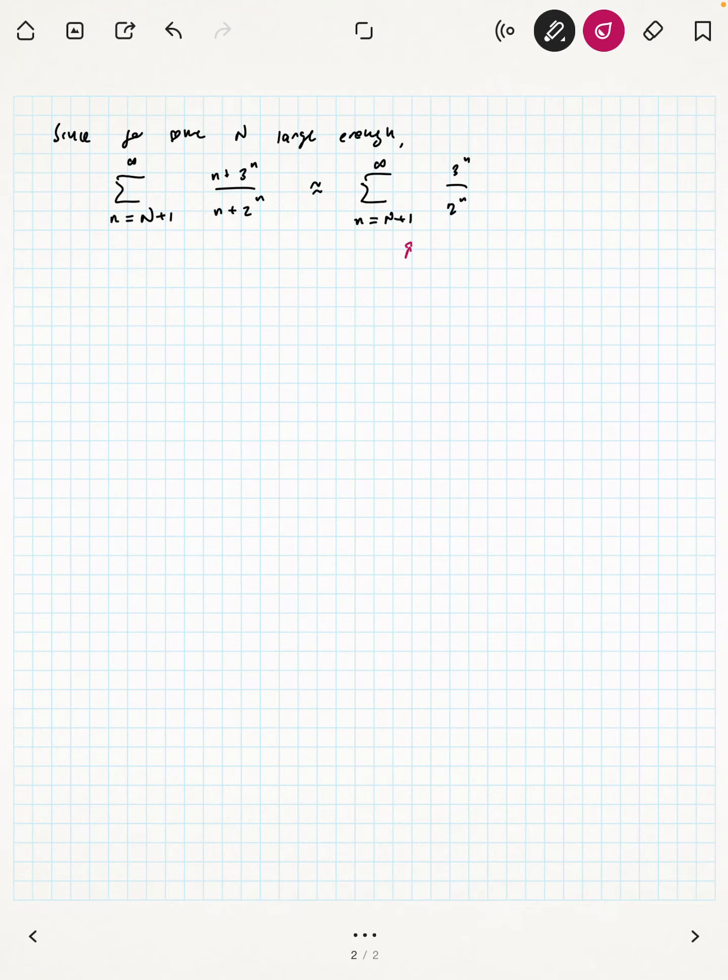So here's why this helps us. Since for some n large enough, the tail n equals to n plus 1 to infinity of n plus 3 to the n over n plus 2 to the n is basically the same as the series 3 to the n over 2 to the n. This diverges, so this also diverges.